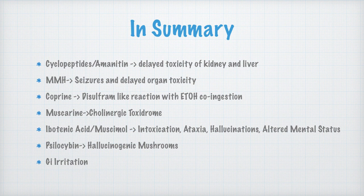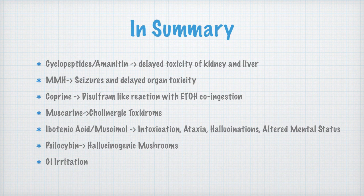In summary, there are seven mycodromes: the cyclopeptides or amatoxin, resulting in delayed toxicity primarily involving kidney and liver dysfunction; gyromitrin or hydrazine toxicity, resulting in seizures and delayed organ toxicity; coprine toxicity, resulting in a disulfiram-like reaction only with ethanol co-ingestion; muscarin toxicity, essentially a cholinergic toxidrome; ibotenic acid and muscamol toxicity involving GABA-A agonism — patients appear intoxicated with ataxia, hallucinations, and altered mental status; psilocybin, the hallucinogenic or magic mushroom toxidrome; and gastrointestinal irritation. Those are the seven mycodromes.